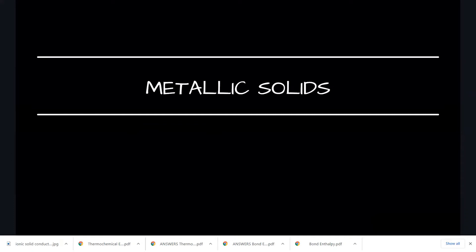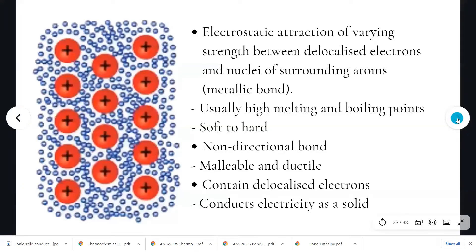In this lesson we will be looking at metallic solids and their properties in more detail. Metallic solids are made up of only one type of metal atom. The valence electrons are delocalized and they are free to move throughout the solid. The particles within a metallic solid are atoms arranged in a regular pattern, held together by the electrostatic attraction between the delocalized electrons around each nuclei and the positive charge of the protons within the nuclei. We call this attraction the metallic bond.